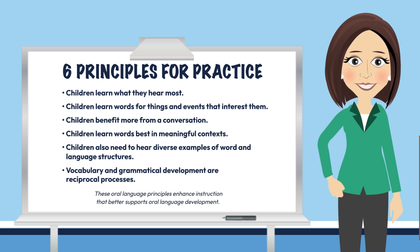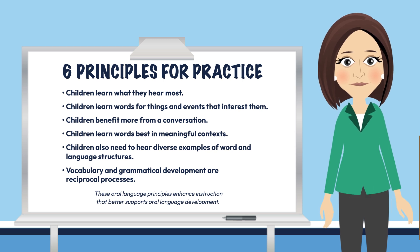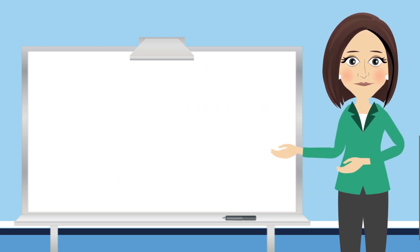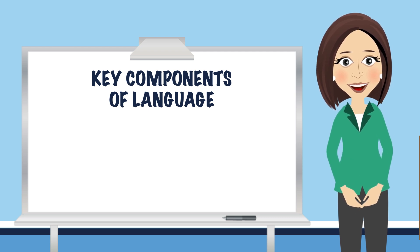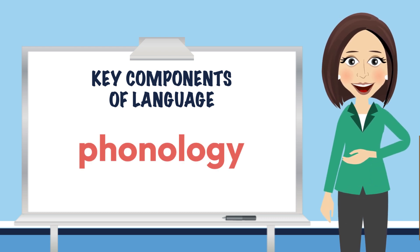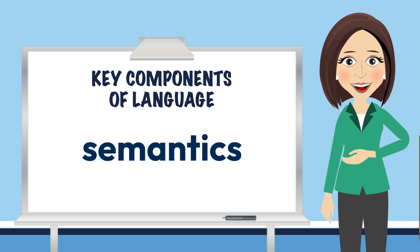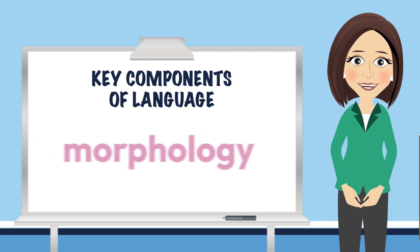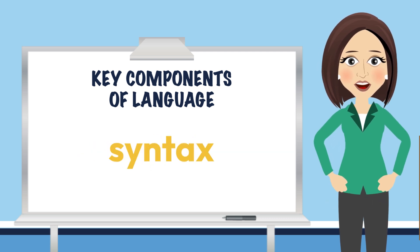Overall, these oral language principles enhance instruction that better supports oral language development. Our last big concept of study to this point are the key components of oral language. These components make up the oral language system we use to share ideas, thoughts, and feelings with others. The five key components are: phonology, which refers to the basic sound units of language; semantics, which is a system of rules that govern the meaning of words and phrases; morphology, which deals with meaning at the small meaning parts of words such as suffixes and prefixes; and syntax, which refers to word order.